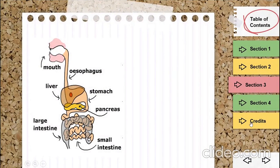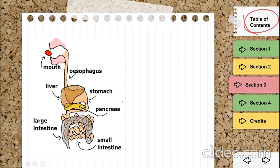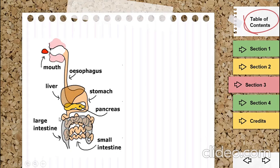Here we have another illustration. The animal enters food from the mouth, then the food goes to the esophagus, then the stomach. After the stomach, the food goes to the small intestine to be absorbed, then to the large intestine, and finally out through the anus.